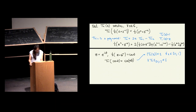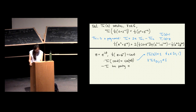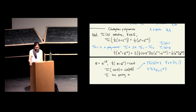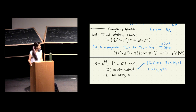Another thing you can observe is that T_N has parity N. You can see this from the recursion: T_1 is odd, T_2 is even, T_3 is odd, and so on.